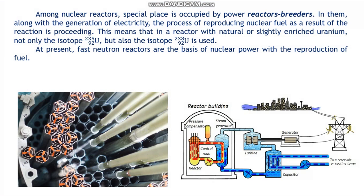Among nuclear reactors, a special place is occupied by power reactor breeders. In them, along with the generation of electricity, the process of reproducing nuclear fuel proceeds. This means that in any reactor with natural or slightly enriched uranium, not only U-235 but also U-238 is used. At present, fast neutron reactors are the basis of nuclear power with the reproduction of fuel.